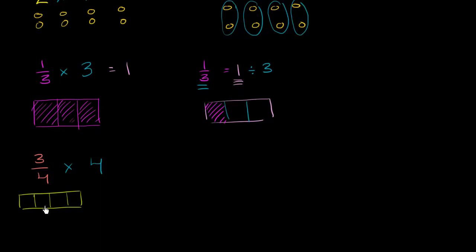Now 3 fourths. This is four equal sections. And 3 fourths represents three of them. 1, 2, 3.